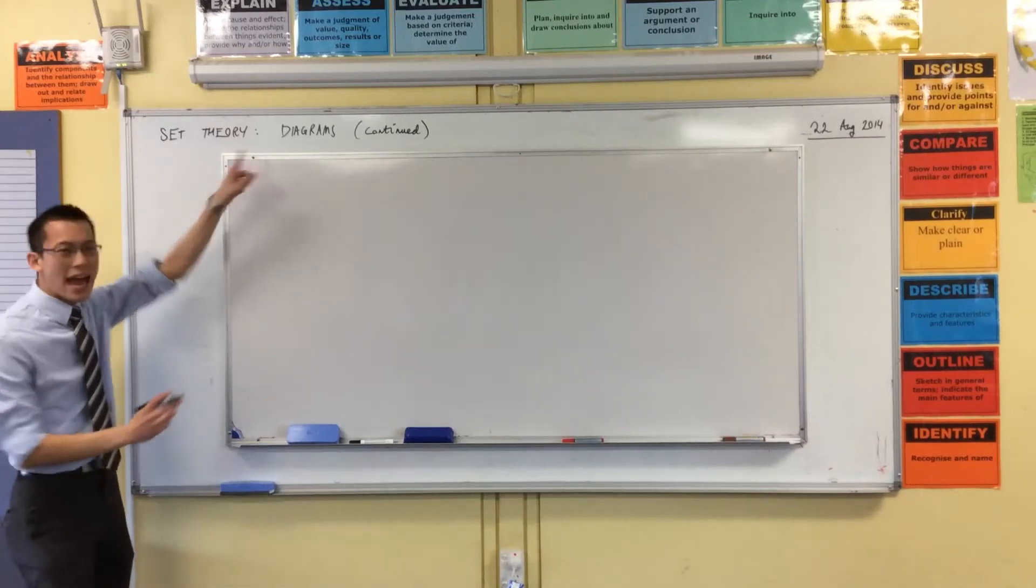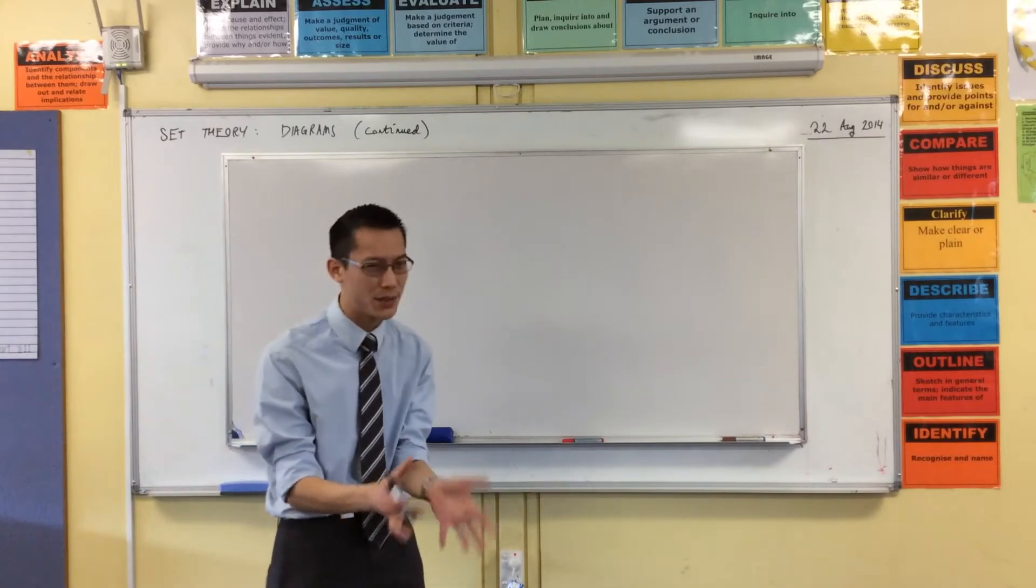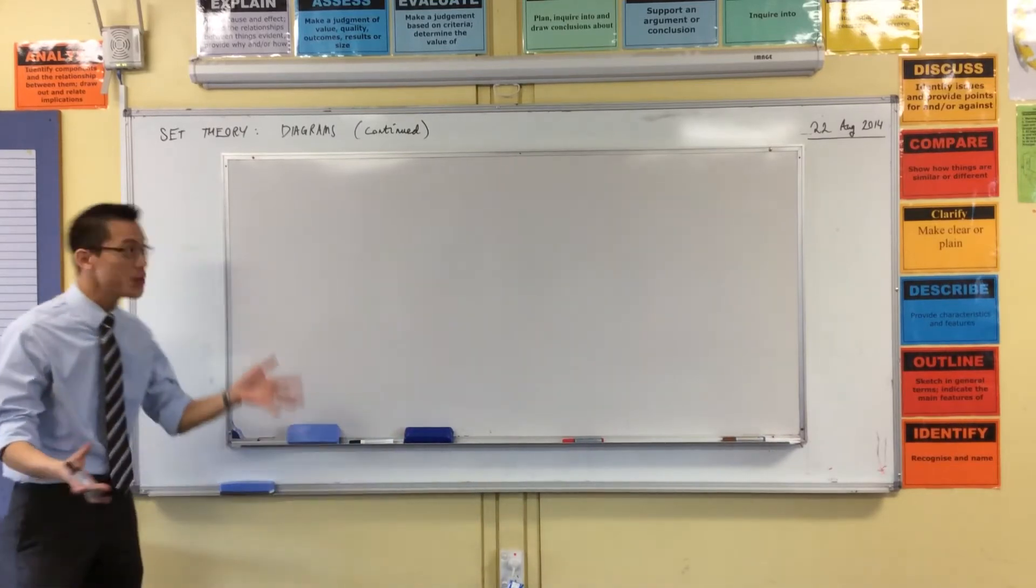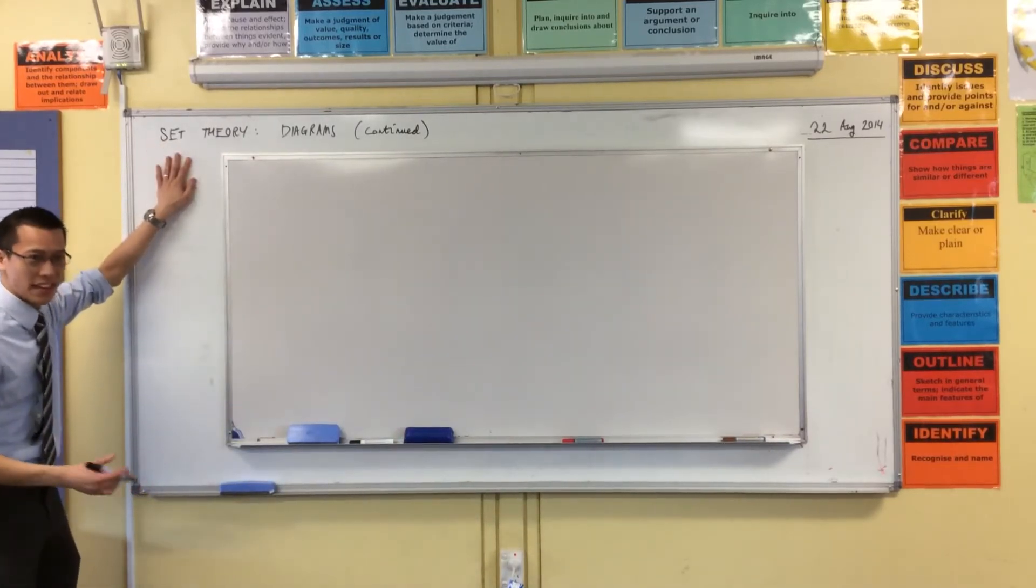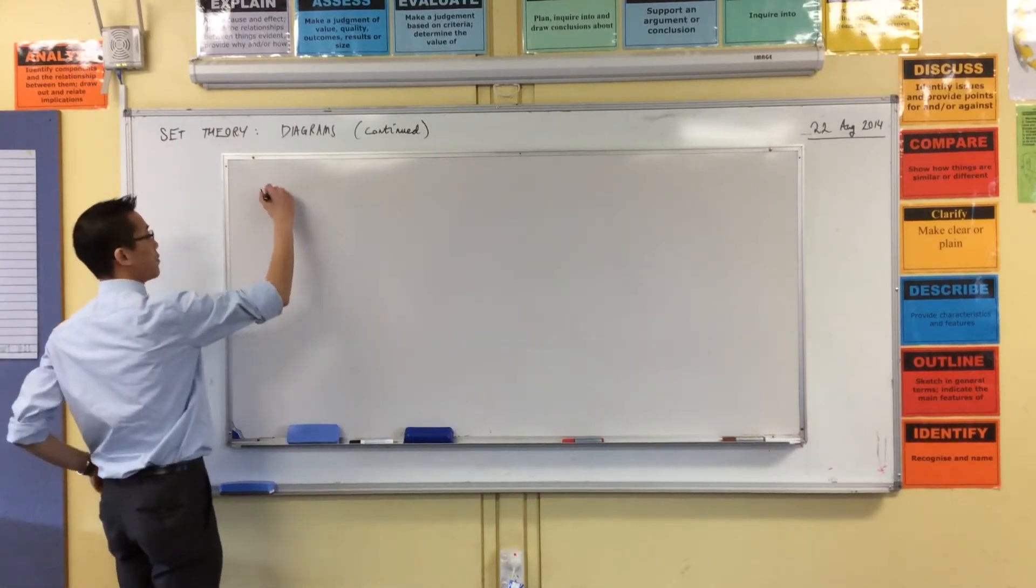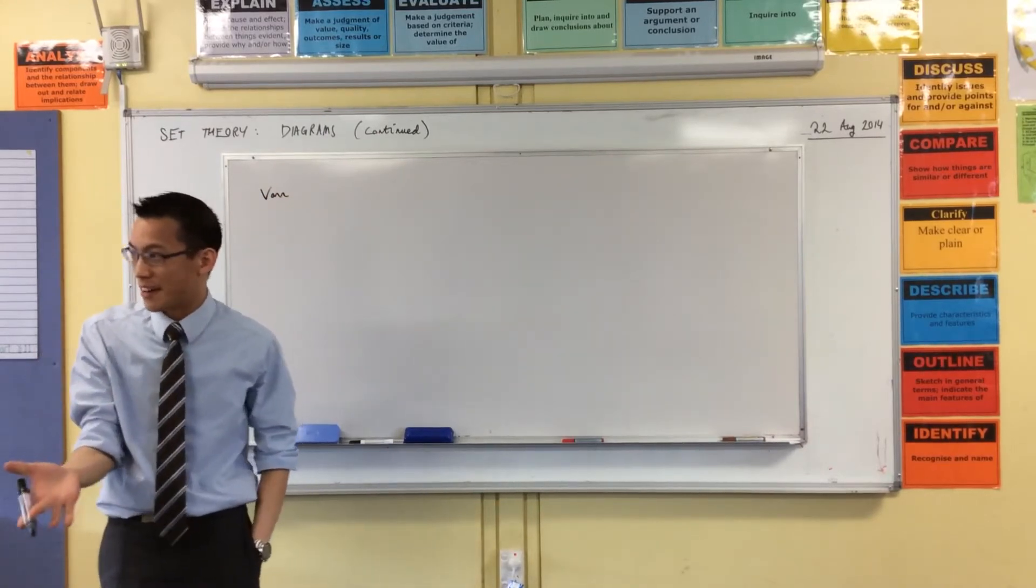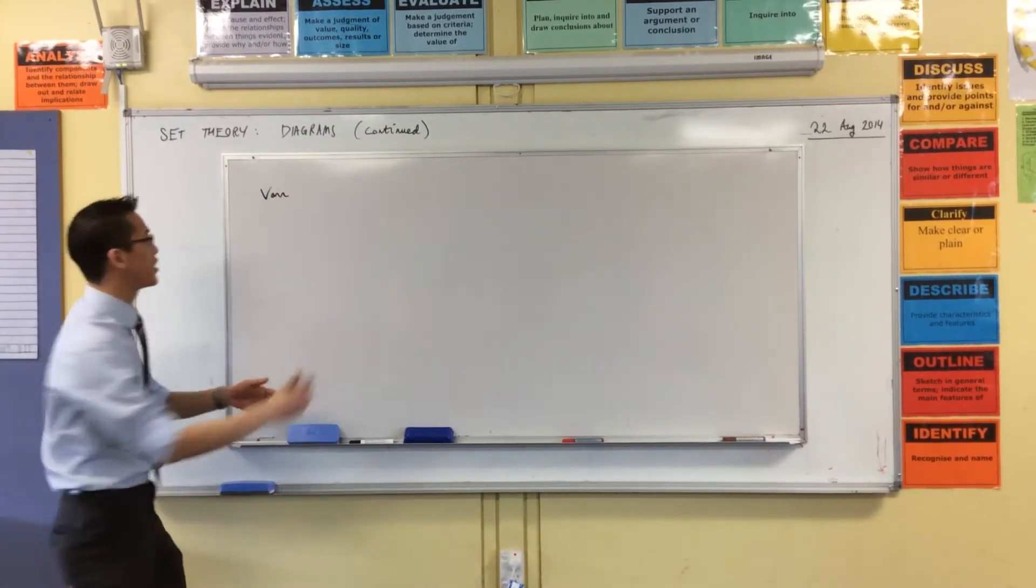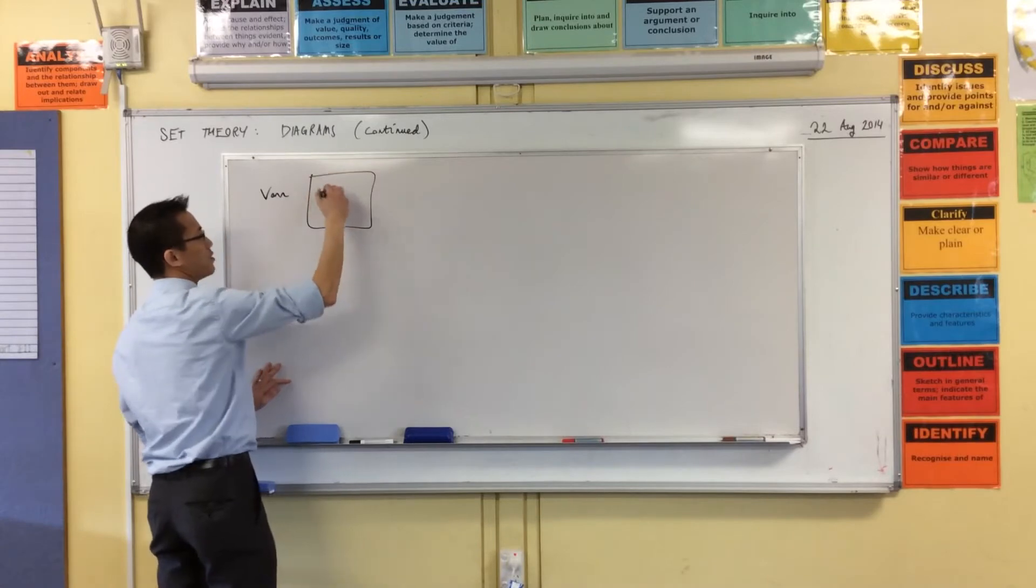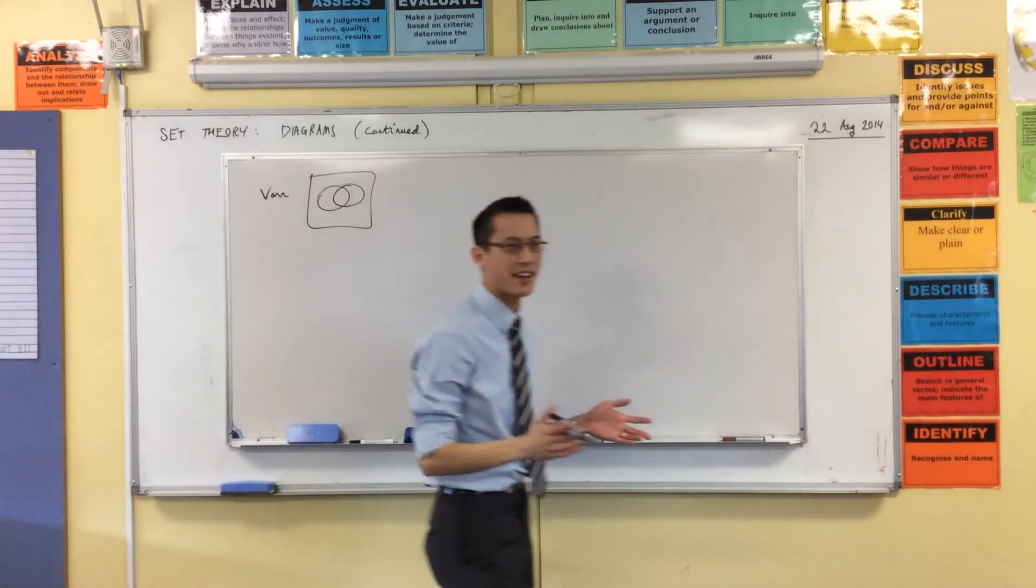We looked at diagrams and we learned that there were two main categories of diagrams that we can use to represent sets. The first one you're very familiar with, what's it called? A Venn diagram. And what does it look like? It looks like circles. Very good. That's right. So you had something like this. Classic Venn diagram.